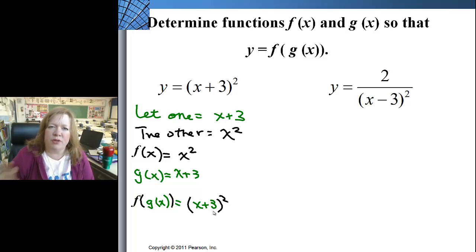There is more than one answer for these, but this is the way I like to think of it. So on this one there's a couple of ways you can do this. You can say 2 over something. So I can have one function be 2 over x and the other function be x minus 3 quantity squared. That works. I could also say 2 over x squared and then make the other one x minus 3.